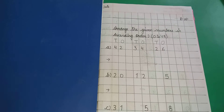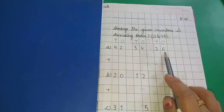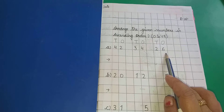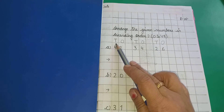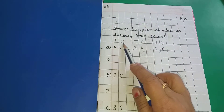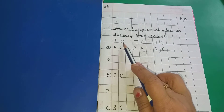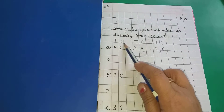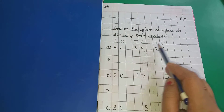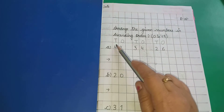But आज हम two digit numbers compare करेंगे. हमारे पास two digits given हैं. For that, आप अपनी help के लिए numbers के ऊपर T.O. mention करेंगे — T stands for tens, O stands for ones. Given numbers के ऊपर आप T.O. mention करेंगे, लेकिन बाद में इसको rub कर देंगे — यह आपकी help के लिए है।